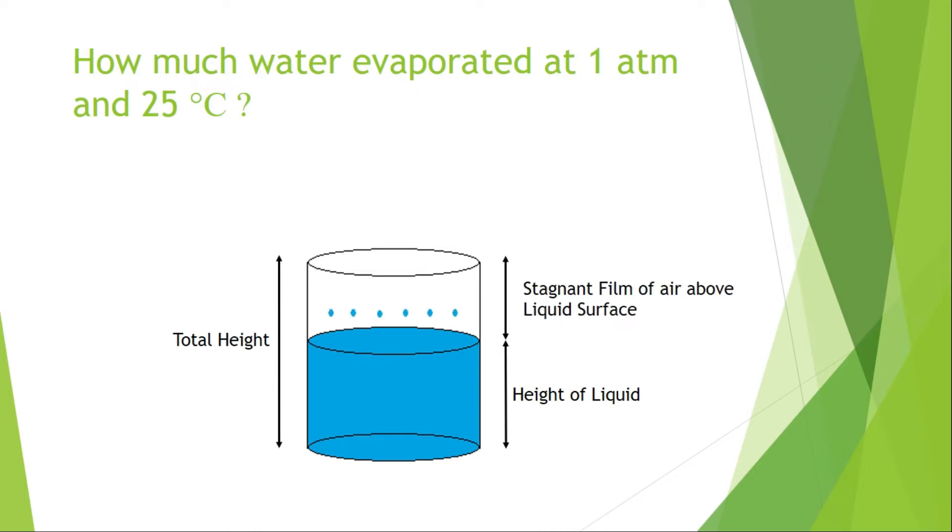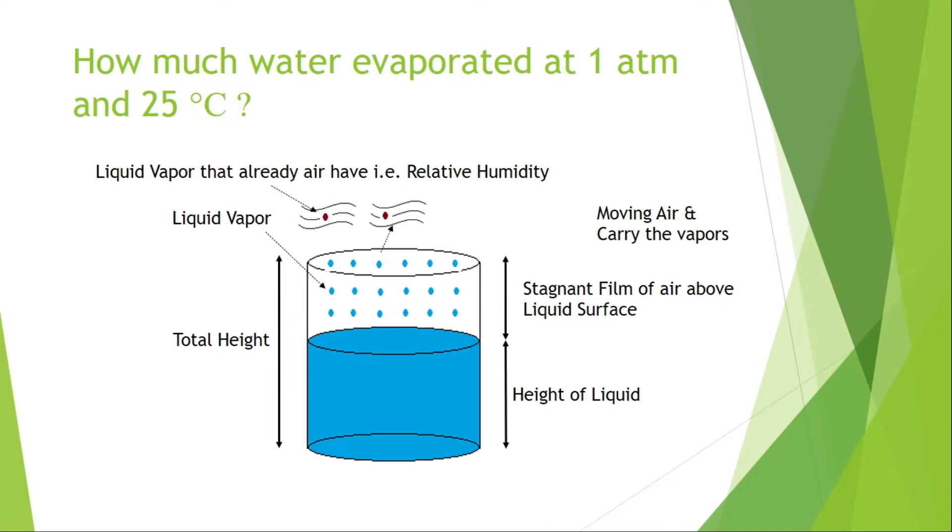The blue dots represent the liquid vapor above the tank where air is moving. The red dots represent moisture already present in the air, known as relative humidity. This moving air takes away the liquid vapor with it.